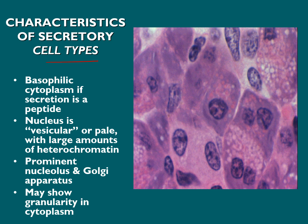The characteristic of the secretory cell type is that the cytoplasm is typically basophilic — more blue than pink. The reason is that these cells have well-developed rough endoplasmic reticulum and Golgi apparatus, which are responsible for packaging and exporting protein. The nucleus is vesicular in shape and lightly staining.